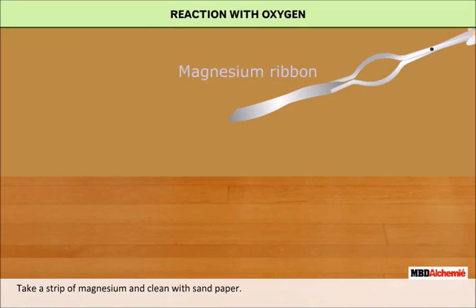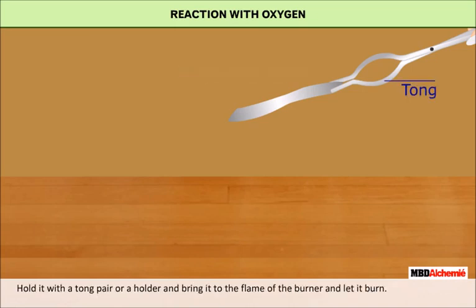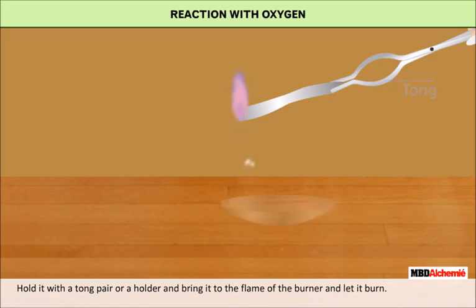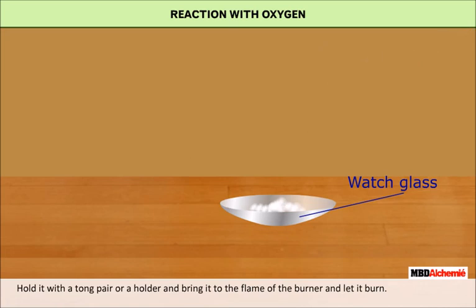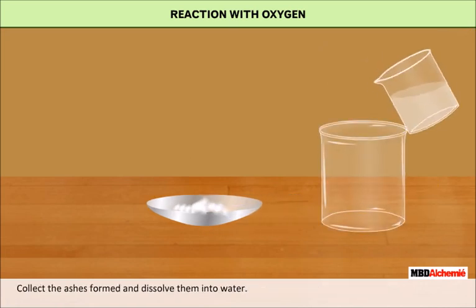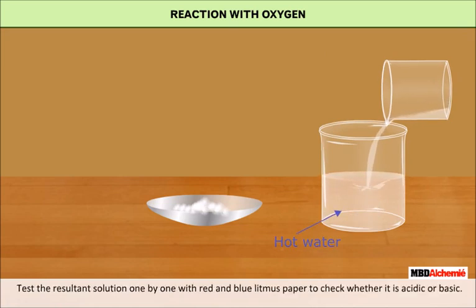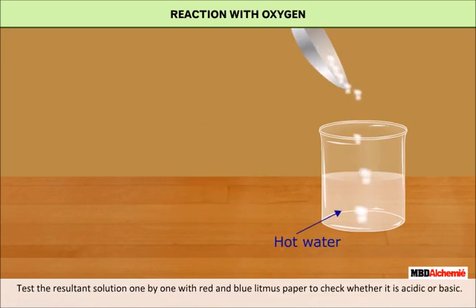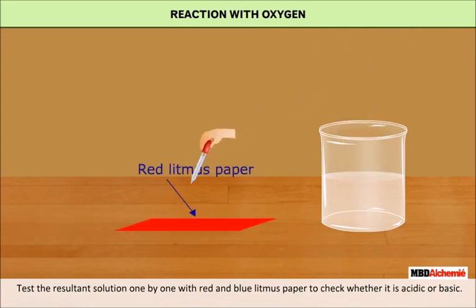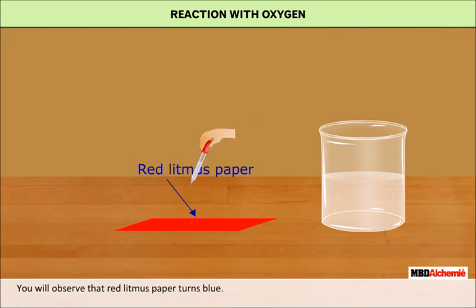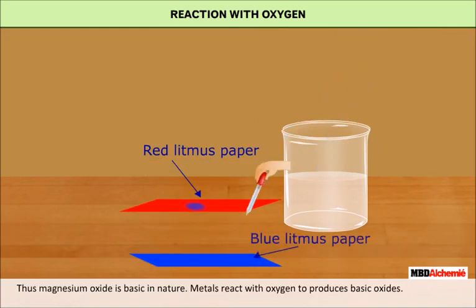Take a strip of magnesium and clean it with sandpaper. Hold it with a pair of tongs or a holder. Bring it in contact with the flame of a burner and let it burn. Collect the ashes formed and dissolve them in water. Test the resultant solution with both red and blue litmus paper to check whether it is acidic or basic. You will observe that the red litmus paper turns blue. Thus, magnesium oxide is basic in nature. Metals react with oxygen to produce basic oxide.